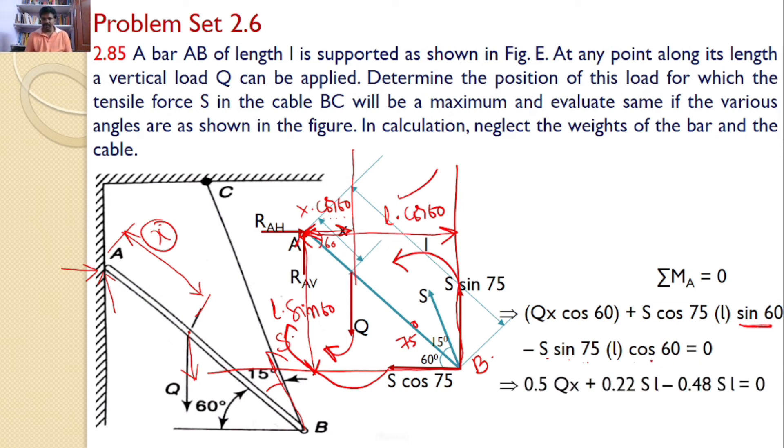So this I can simplify and upon simplification I will get 0.5 into QX plus 0.22 SL minus 0.48 SL is equal to 0. From this I can simplify S is equal to 1.92 into QX by L.